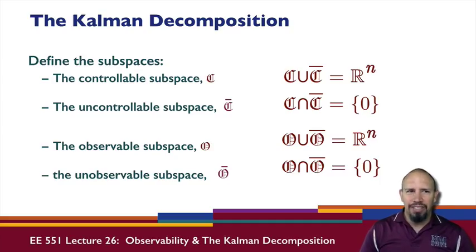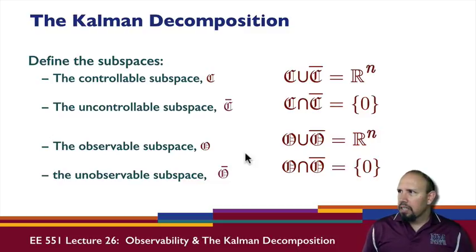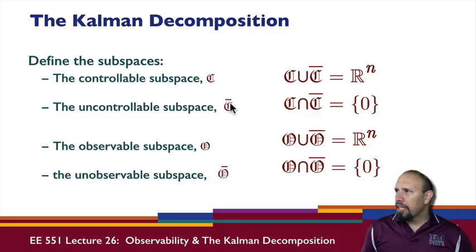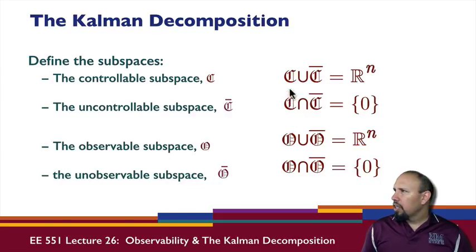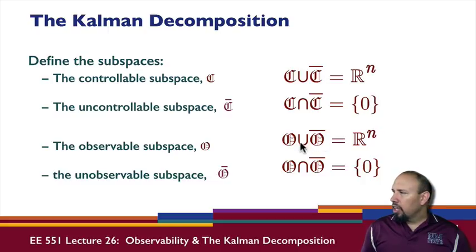We're talking about the Kalman decomposition. In the Kalman decomposition, we have four subspaces: the controllable subspace C, the uncontrollable subspace (which is the complement of that), the observable subspace O, and the unobservable subspace O-bar. These two subspaces — controllable and uncontrollable — have a union of all of R-N and an intersection of only the zero element. Similarly, the union of the observable and unobservable subspaces is all of R-N, and the intersection is only the zero element.